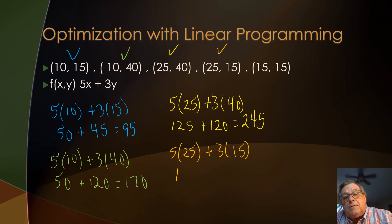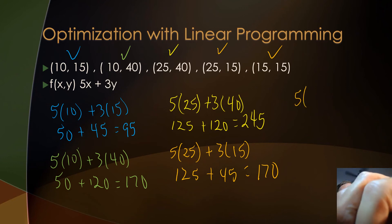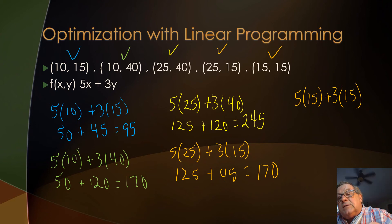5 times 25 is 125, 3 times 15 is 45 and that's going to equal 170. And then lastly we'll check the 15, 15 where we've got 5 times 15 plus 3 times 15 and 5 times 15 is 75 and 3 times 15 is 45 and that's going to equal 120. So which one gives us the maximum profit?